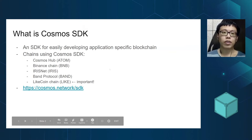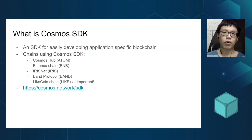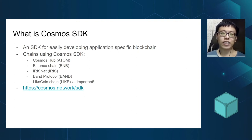Let me introduce what Cosmos SDK is. Cosmos SDK is an SDK developed by the Cosmos team for easily developing application-specific blockchains. It provides many modules that many blockchains would like to have, for example defining a token, having governance, or having staking so that the blockchain can run on proof of stake. Developers can also make their own modules for the functionality of their own blockchain, which is called an application-specific blockchain.